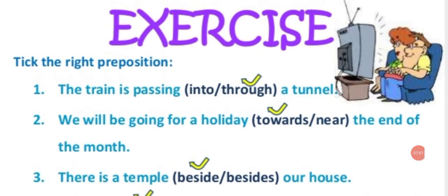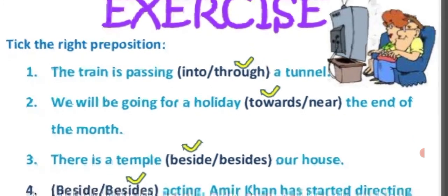One more exercise: take the right preposition. Sentence 1: The train is passing ___ a tunnel — options are 'into' and 'through' — the answer is 'through': the train is passing through a tunnel. Sentence 2: We will be going for a holiday ___ the end of the month — options are 'towards' or 'near' — answer is 'towards': towards the end of the month.